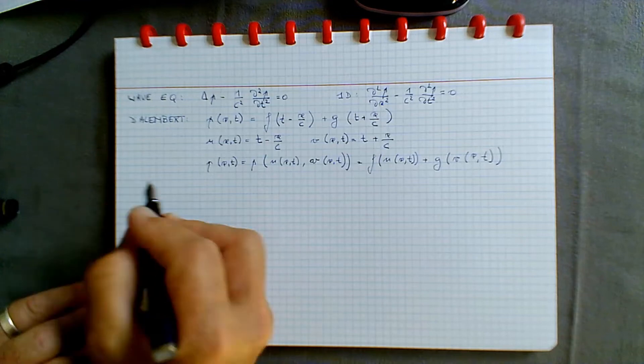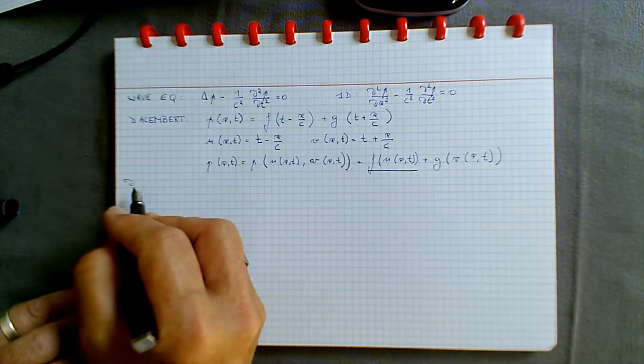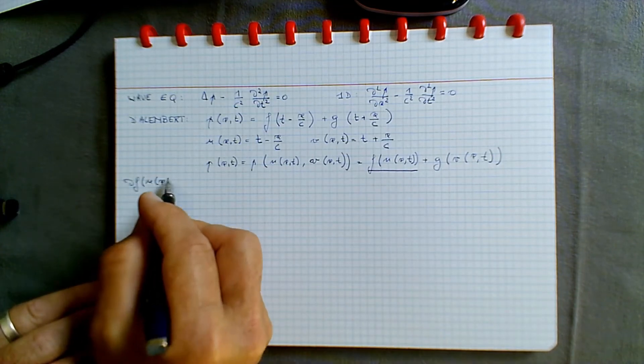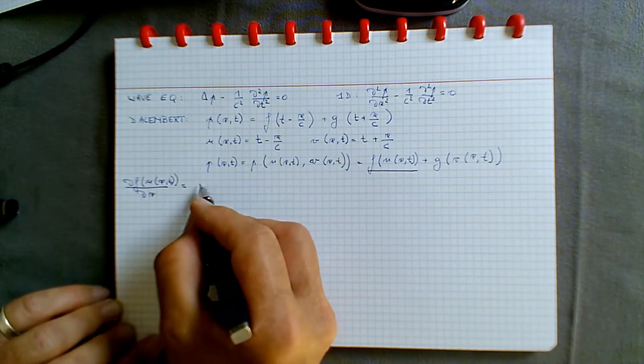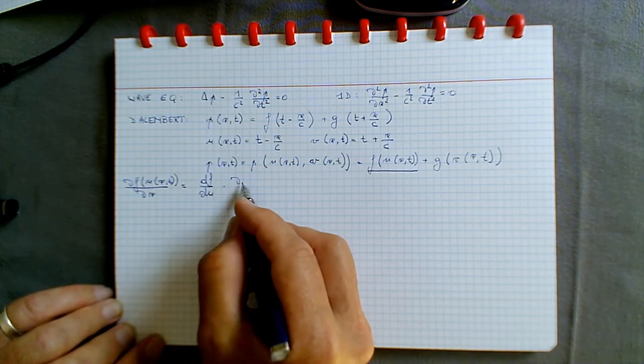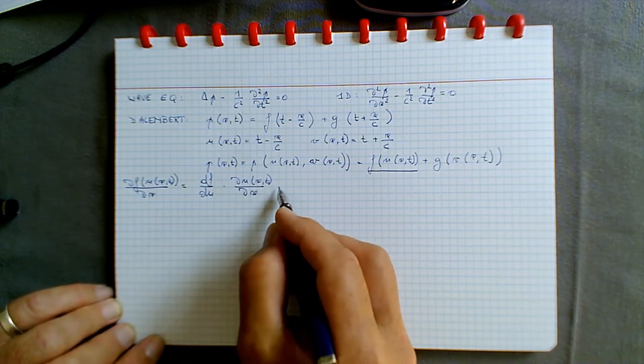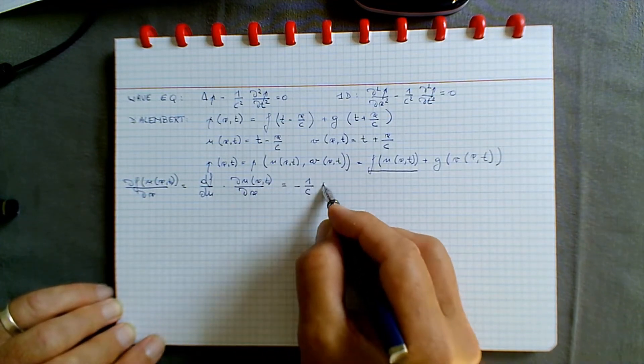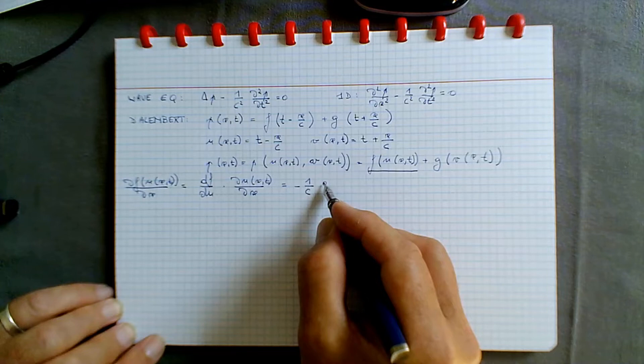Let's verify that this is indeed a solution to the 1D wave equation. We calculate the first derivative of f with respect to x. Since f is a function of x via the function u, the partial derivative of f with respect to x equals df over du times the partial derivative of u with respect to x. That partial derivative of u with respect to x is minus 1 over c, so the partial derivative of f with respect to x is minus 1 over c times df over du.